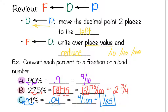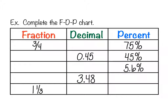Now we have a fraction-decimal-percent (FDP) conversion chart to fill in any blanks. For the first line, 3/4 — we know that's 75 percent. For the decimal, either move the decimal backwards twice from 75% to get 0.75, or do 3 divided by 4, which also gives 0.75.